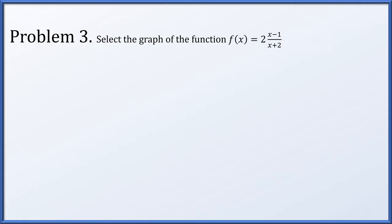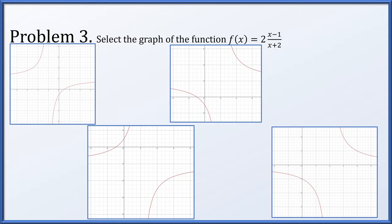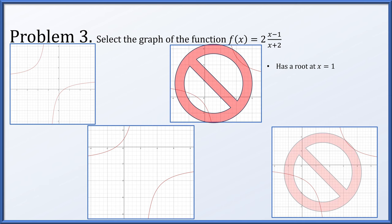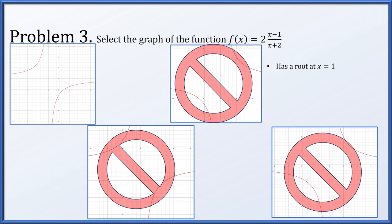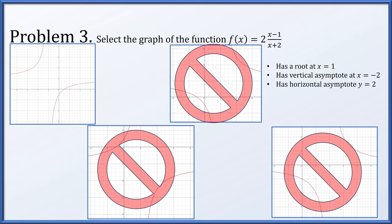In problem 3, we have f(x) = 2(x-1)/(x+2), and we have to determine which graph matches. We're looking for a root at x = 1. Scanning through, all of them except one have roots at x = 1, so that information alone really helps narrow it down. We're looking for a vertical asymptote at x = -2, and that matches. We're also looking for a horizontal asymptote at y = 2, since the numerator and denominator both have leading coefficient 1 but it's being multiplied by 2 overall. That still matches the one remaining graph.